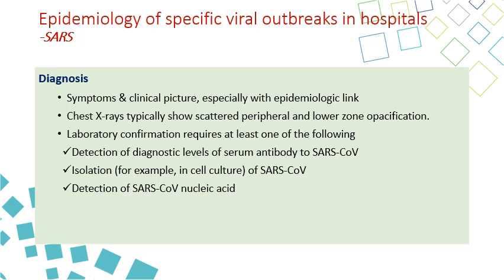Diagnosis depends on signs and symptoms, epidemiologic links, history of exposure to a case, chest X-ray findings showing peripheral lower zone opacification of pneumonia, and confirmation by lab tests. Detection of diagnostic levels of serum antibody is not very accurate. Isolation of the SARS virus or detection of SARS nucleic acid using PCR is probably the most useful test.